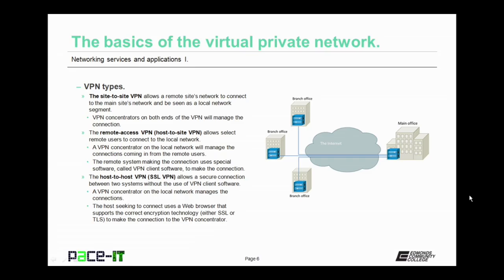There are several different types of VPNs. There is the site-to-site VPN, which allows a remote site's network to connect to the main site's network and be seen as a local network segment. VPN concentrators on both ends of the VPN will manage that connection.